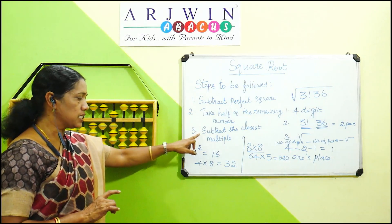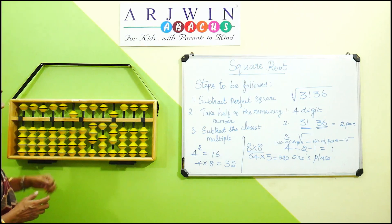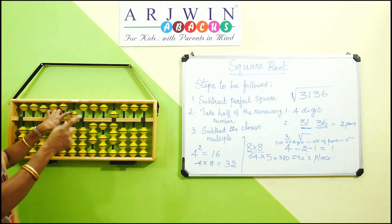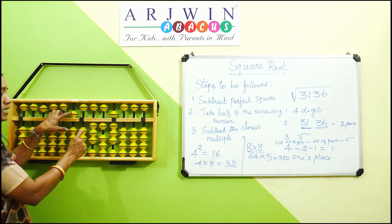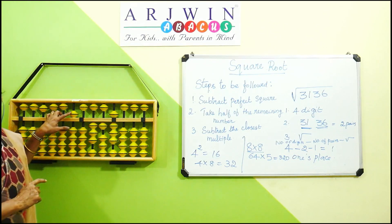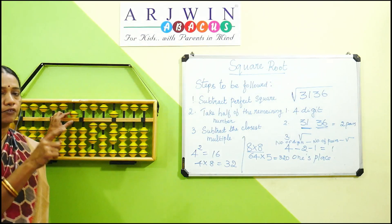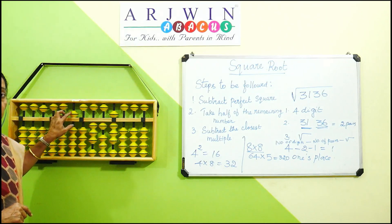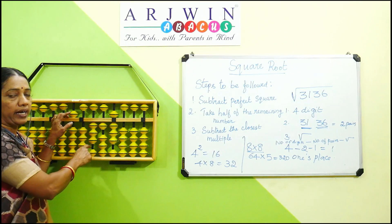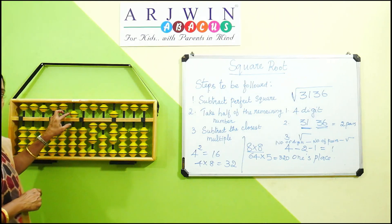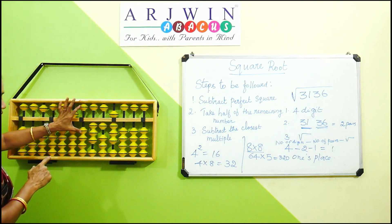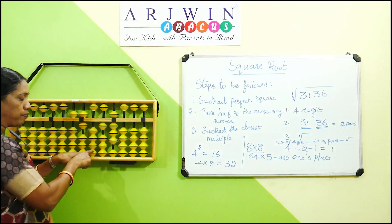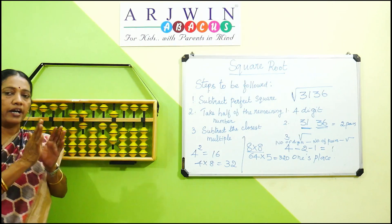Third step: subtract the closest multiple of the answer. Our answer digit is 5. We need to find a multiple of 5 that can be subtracted from 31 (the first two digits of 318). In the 5 times table, 5 sixes are 30, which can be subtracted from 31. So the next answer digit is 6 — keep 6 in the answer place. Subtract 30 from 31. Our steps are complete.